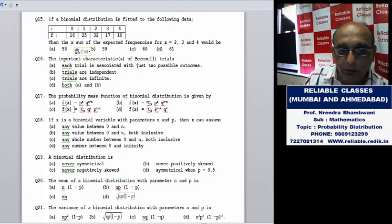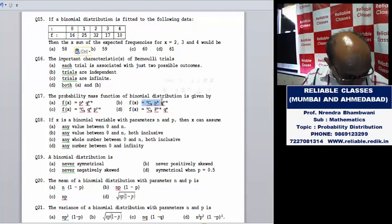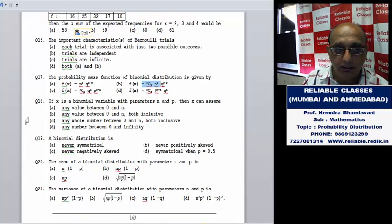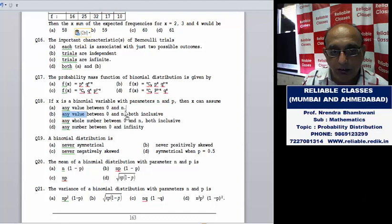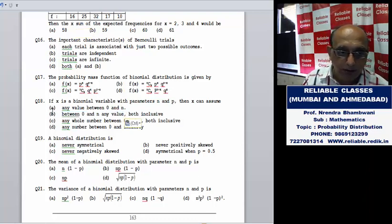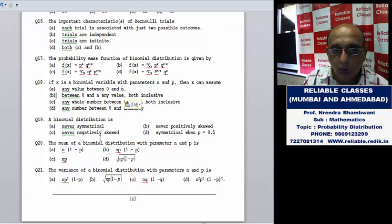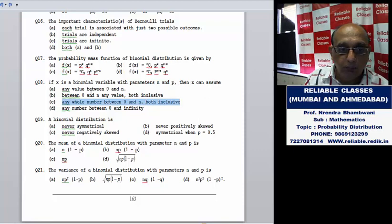Seventeenth one: the probability mass function of a binomial distribution is given by nCx * p^x * q^(n-x). If x is a binomial variable with parameters n and p, then x can assume any value between 0 and n, both inclusive - whole numbers. Whole number between 0 and n, that's the answer.